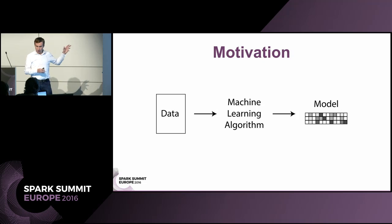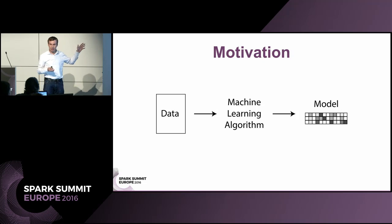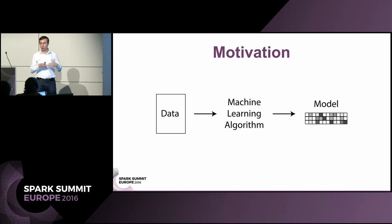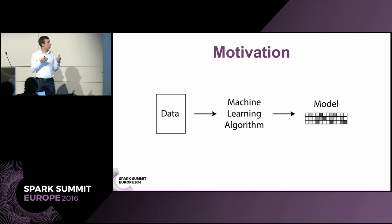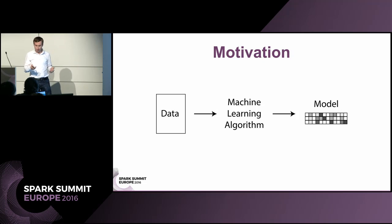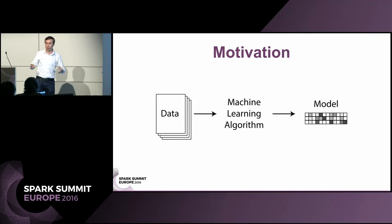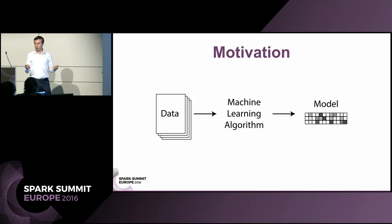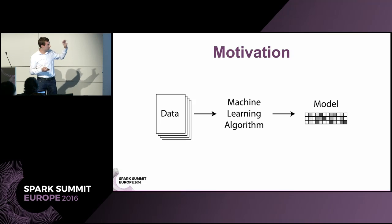This is a figure you've probably seen in some variations many times today. We have some dataset, we have a machine learning algorithm that takes in this data and produces a model. This model is typically in the form of a vector or a matrix that we can then use to make decisions. And luckily we have things like Spark to help us process this data in parallel and still do this same pipeline.